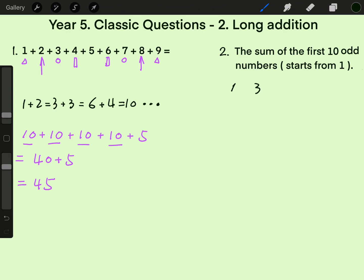1, 3, 5, 7, 9, 11, 13, 15, 17, 19. Again, if we just add all the numbers one by one, it costs too much time.